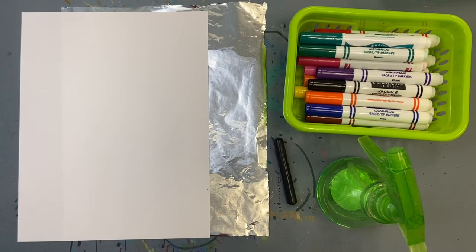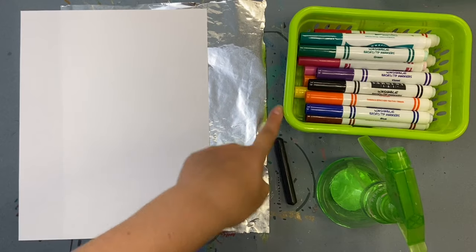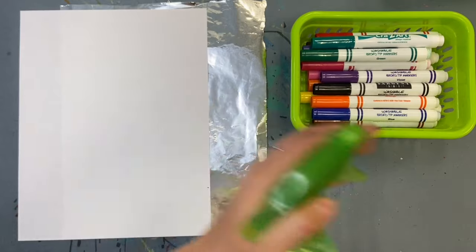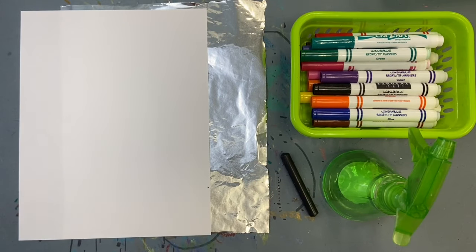For this project, you need a piece of white paper, a sheet of foil, a black crayon, markers, and either a spray bottle of water or a wet sponge.